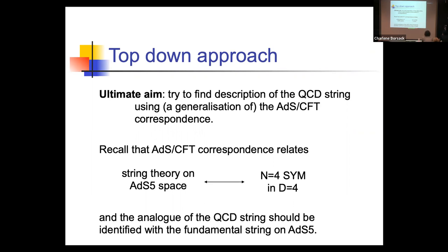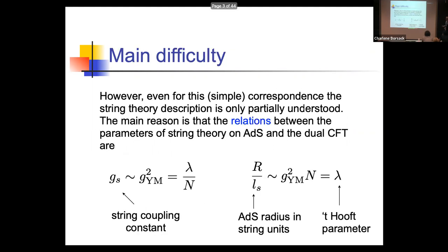Even if we look at the simple example of AdS-CFT being dual to a conformal theory, the problem is not entirely trivial. For the case of AdS-5, the key issue is the relation between the parameters of the gauge theory and the gravity background. The string coupling constant is proportional to lambda over N, and the radius of the AdS space in string units is proportional to the 't Hooft parameter, g²_YM times N.